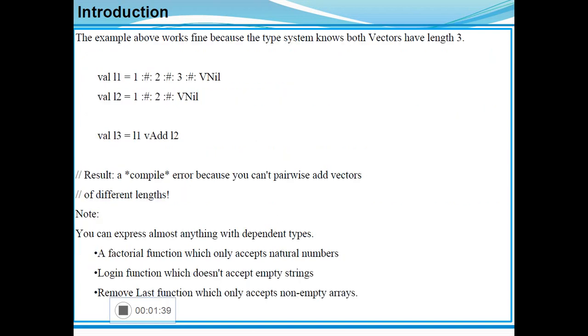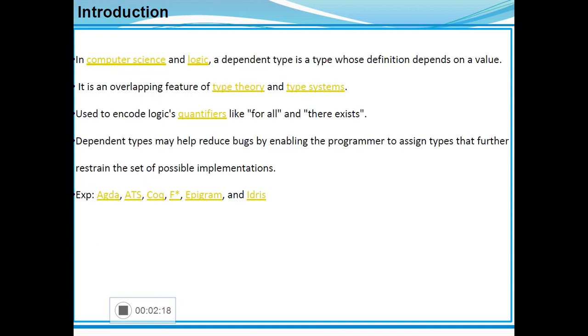In the previous example, both vectors have the same size. If you give vectors of different sizes, we cannot do the normal arithmetic operation. At that time the system will produce a compile-time error because you cannot pairwise add vectors of different lengths. You can express almost anything with dependent types: a factorial function which only accepts natural numbers, a login function which doesn't accept empty strings, and a remove last function which only accepts non-empty arrays. These are some exception cases we can evaluate using dependent type paradigm.